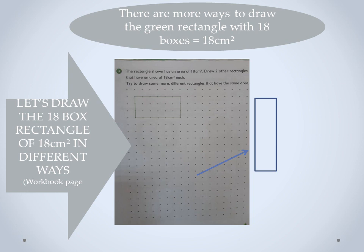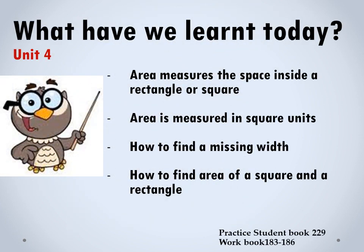Today we've learned that area measures the space inside a 2D shape — a rectangle or a square — unlike the perimeter which measures all the sides on the outside. Area is measured in square units. Remember, it's not like perimeter where you just write centimeters or meters — here you write cm with a small raised two, which is what we call square centimeters. We also learned to find a missing width by dividing the area by the length.